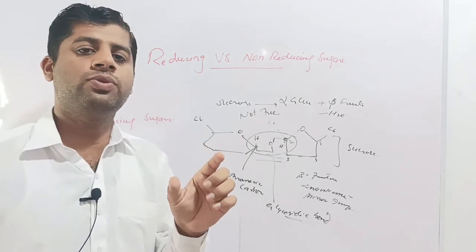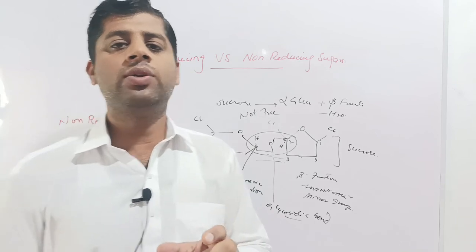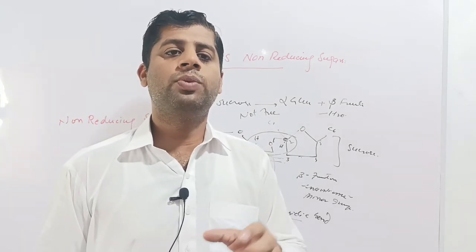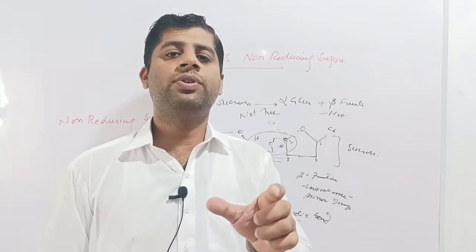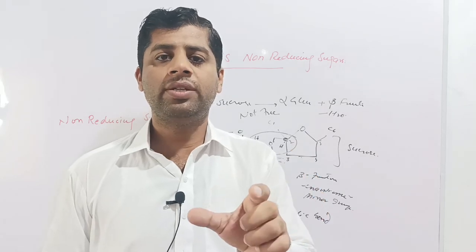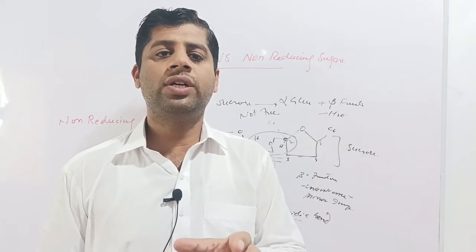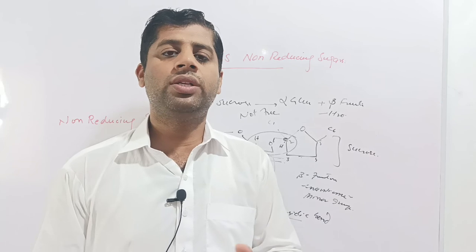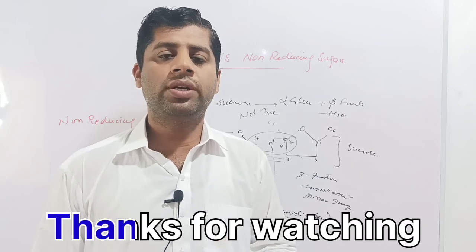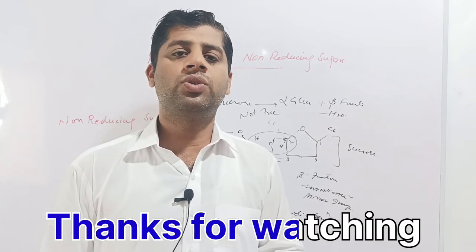In summary, the difference between reducing and non-reducing sugars is based on anomeric carbon freedom. If the anomeric carbon is free, the sugar is a reducing sugar. If it is not free and is bound in a glycosidic linkage, it serves as a non-reducing sugar.